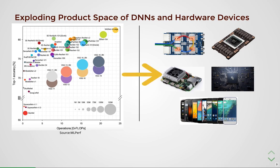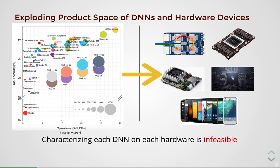This characterization is not only important during deployment but also during development. For example, hardware-aware neural architecture search requires the hardware in the loop to automatically design efficient DNNs. Unfortunately, this exploding product space of DNNs and hardware devices makes it infeasible to characterize each DNN on each hardware device. A viable solution largely adopted by industry and academia is to use latency cost models to characterize DNNs for a given device.